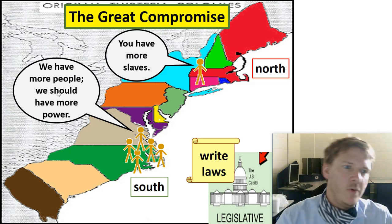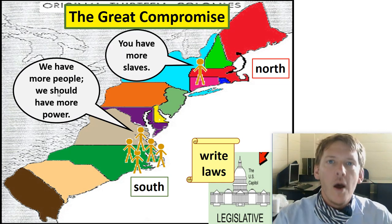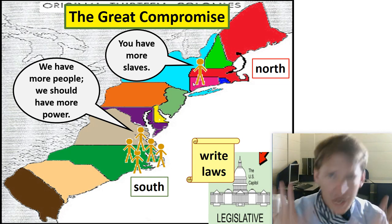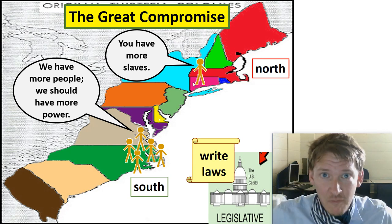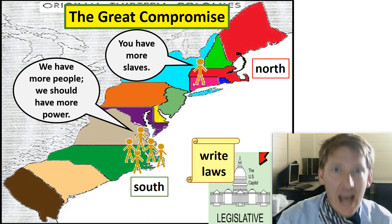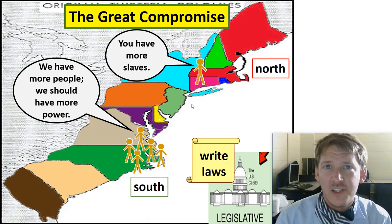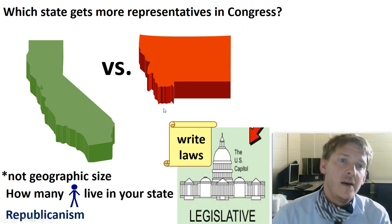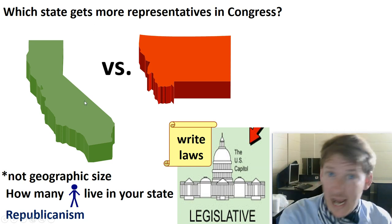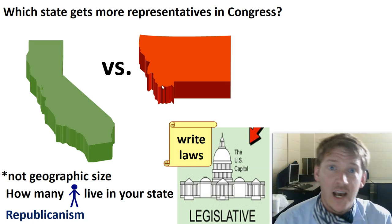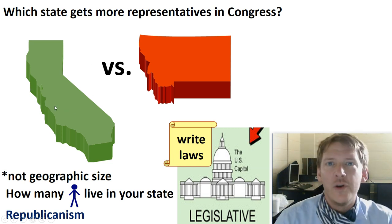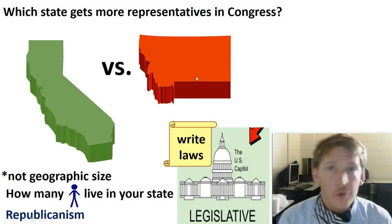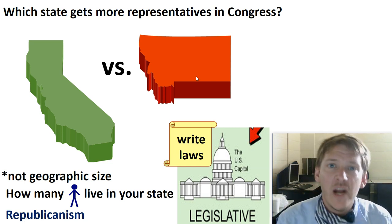In the Great Compromise, the debate is: if you have more people in your state, you should have more representatives and be able to make more laws. Which state gets more representatives in Congress today — California or Montana? It has nothing to do with geographic size; it's about how many people live in your state. California has more people, so it has more representatives in Congress, more people voting yes or no. Montana has fewer people, so fewer representatives. End of the day, California has more power because it has more people, and that's not good for small population states.